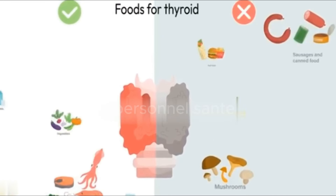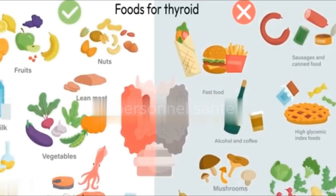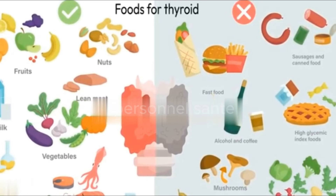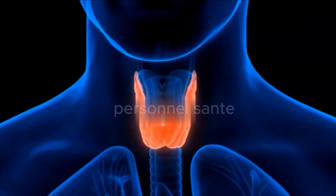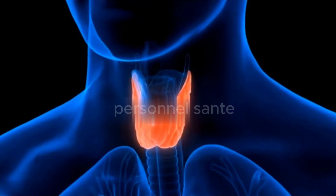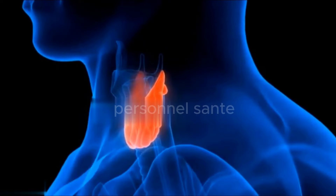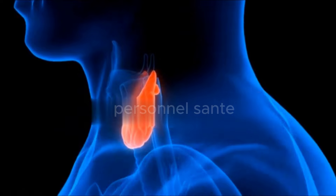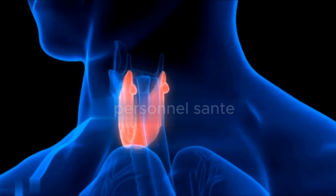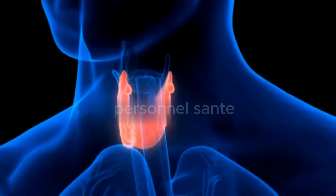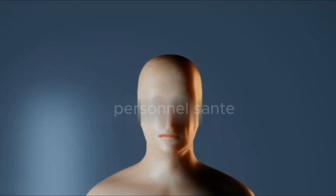According to some studies, thyroid disorders affect up to 10% of the population. Thyroid nodules are found in more than 50% of women over 50 and are 2 to 3 times more common in women than in men. Thyroid conditions can appear early, sometimes as early as puberty.